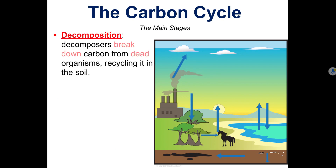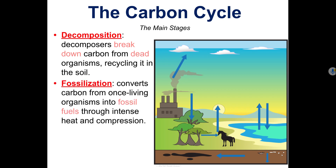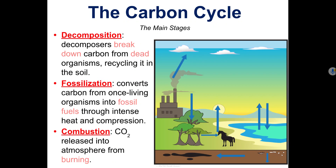Next comes decomposition. During decomposition, decomposers break down carbon from dead organisms, recycling it in the soil. Then there's fossilization, which converts carbon from once-living organisms into fossil fuels, and this happens through intense heat and compression. Last is combustion. Combustion occurs when carbon dioxide is released into the atmosphere from burning. In the picture, you can see dead organisms decomposing and the carbon in them being converted to fossil fuels, which can then be burned, releasing the carbon back into the atmosphere.